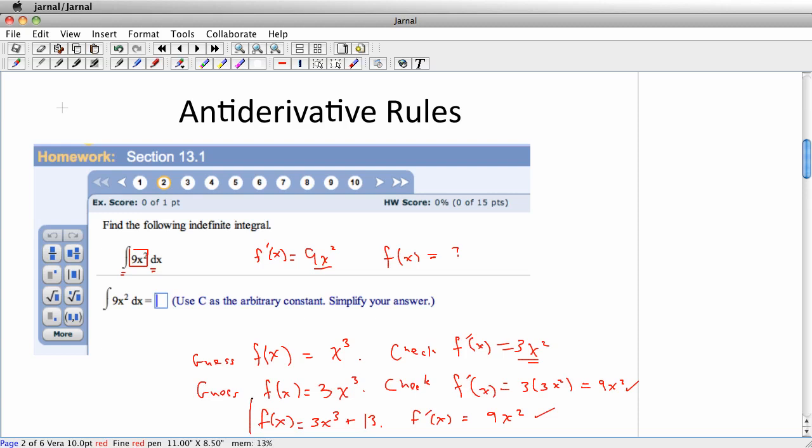So either one of these answers is correct, and in fact, the same reason that adding the 13 worked, you could add any number you wanted to, and so the way we actually are going to write the answer here is we're going to write f of x is 3x cubed plus c. The c is just a letter that we use that stands for a constant. So it could be 3x cubed plus 0, which would be this answer. It could be 3x cubed plus 13. It could be 3x cubed plus anything.